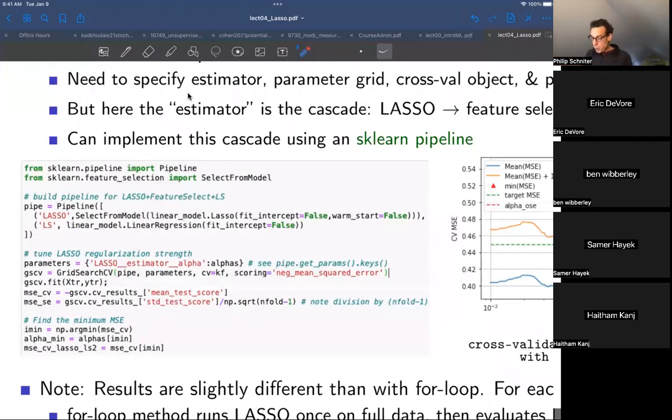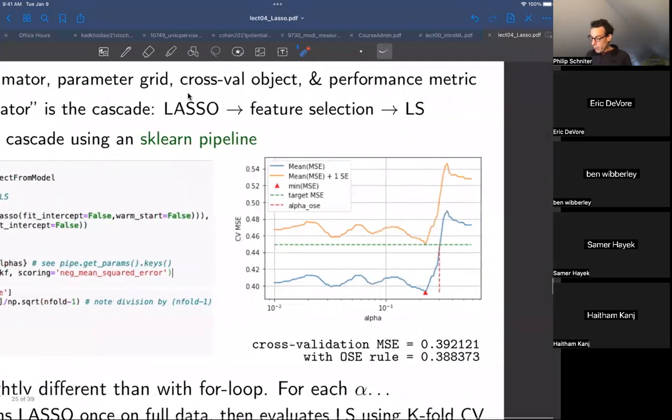Once you construct this pipeline, you can think about it as just a single command that you can stick into GridSearchCV. So we take this pipe object and that's our new estimator - it's this LASSO plus least squares all together. Now you can do GridSearchCV using that estimator. You have to tell it which parameters you're going to use, and in this case our parameters are the alpha parameters for the LASSO part of the pipeline. Then we're going to tell it which cross-validation to use, K-fold, which scoring and so on. And then just like before, we run GridSearchCV.fit and we can make new plots.